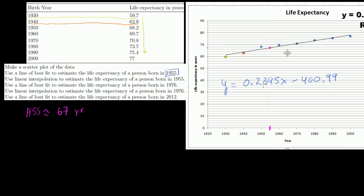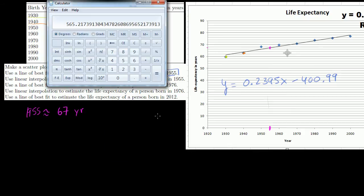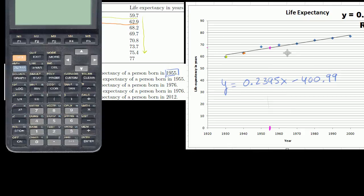Now we can use the equation of this line of best fit to come up with the exact value. When x is equal to 1955, what is y? What is the life expectancy in years? Let's get our calculator out for this.